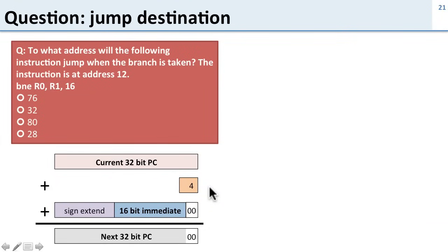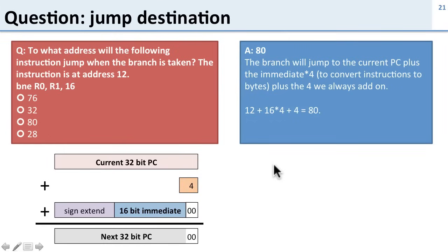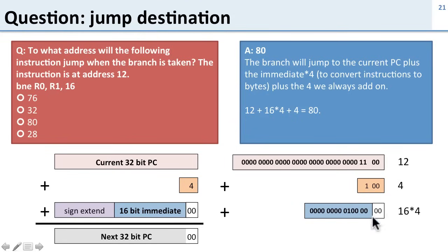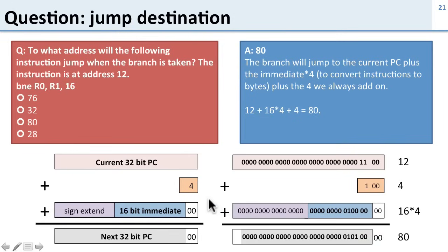Here's a final example: a branch instruction at address 12 with an immediate of 16. Where do we jump? We take the current PC (12), add 4, then take the immediate (16), shift it left by 2 (multiply by 4, giving 64), sign extend it, and add everything together: 12 + 4 + 64 = 80. So we end up at address 80.